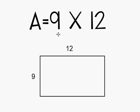We know that area is equal to length times width. So 9 times 12 will give us the area of this rectangle. I'm not so sure what 9 times 12 is. So I'm going to break this 12 apart into two addends.